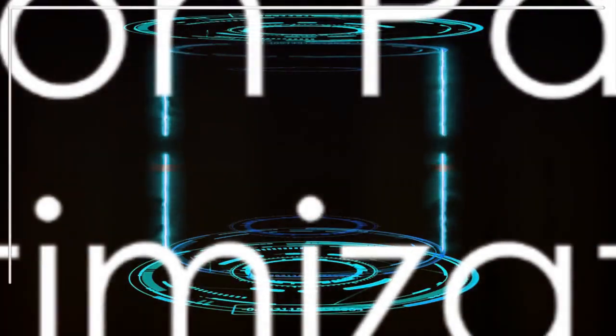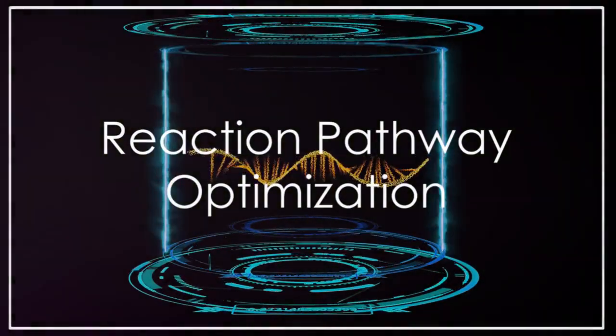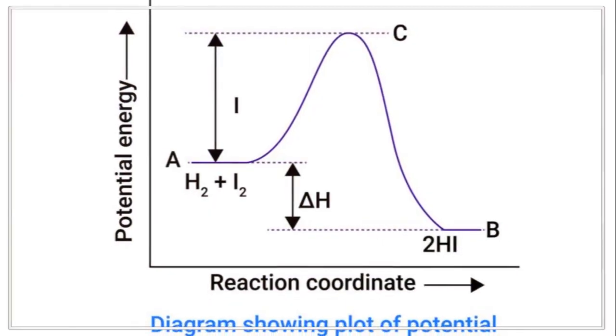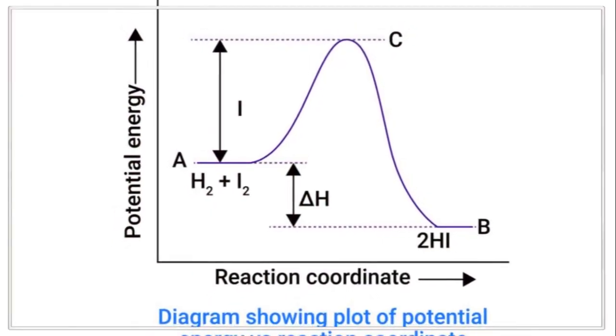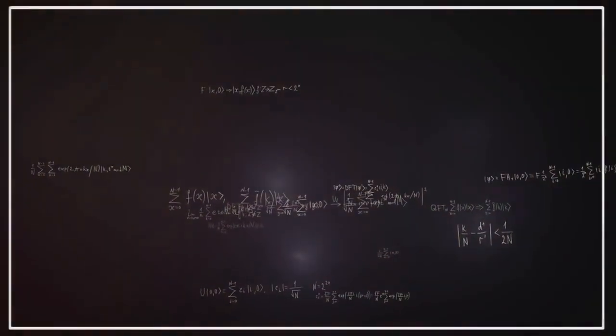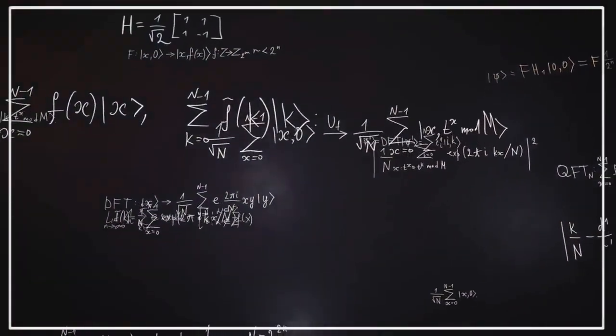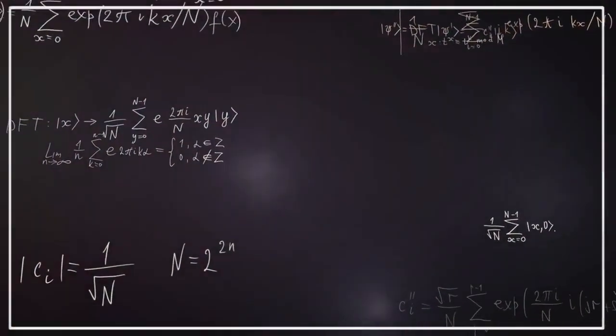In reaction pathway optimization, we first look at quantum enhanced reaction coordinate mapping. This uses potential energy surfaces to map reaction coordinates. The Hamiltonian equation guides this process. The methodology involves using quantum algorithms to map the optimal reaction pathway, considering energy barriers and transition states.